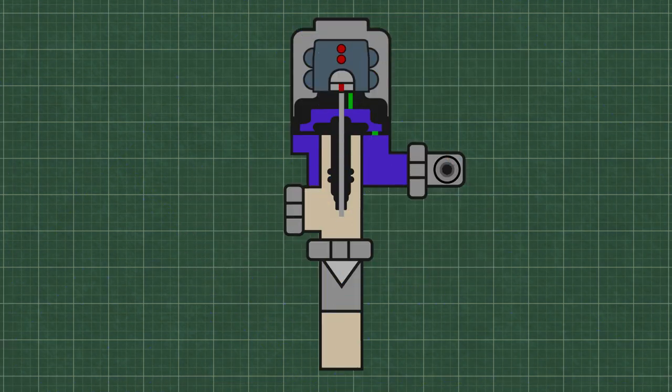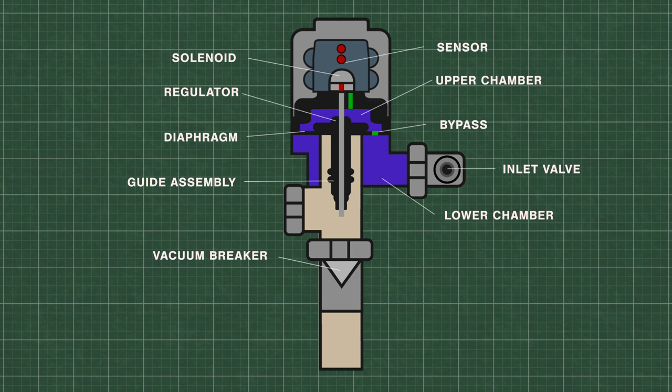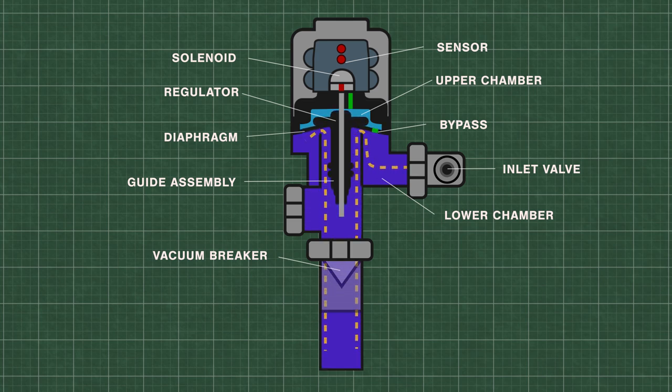Flushometers or flush valves are just automatically timed self-closing valves. At rest, water is at equal pressure in the upper and lower chambers. This keeps the flexible rubber diaphragm closed tightly on the valve seat. When the sensor is triggered, the solenoid opens and releases water from the upper chamber, which decreases the pressure. High pressure water from the inlet now lifts the diaphragm up and travels down the flush pipe.